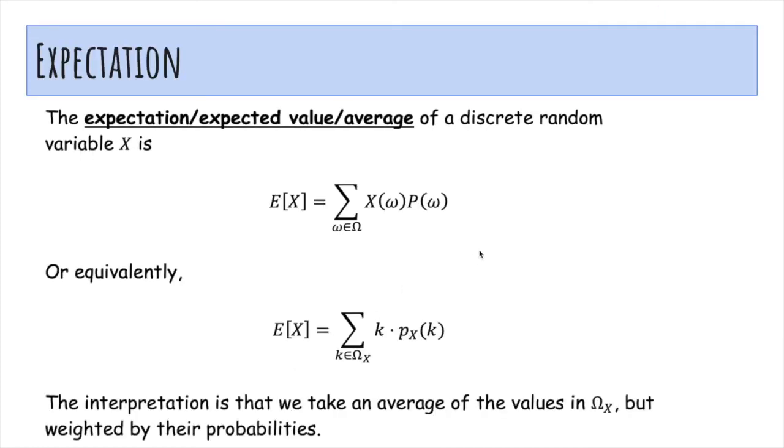So these are two equivalent ways to compute the expected value of a discrete random variable. And this interpretation is that we take a weighted average, and so this will be the average outcome that we expect.